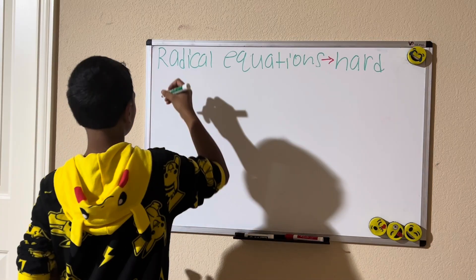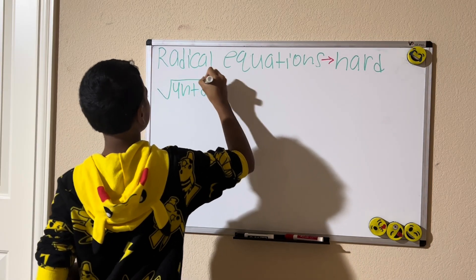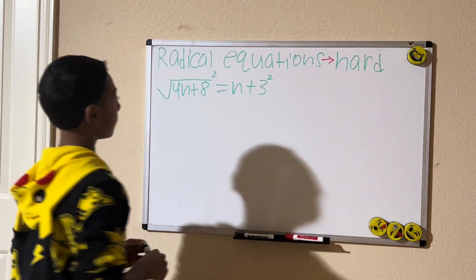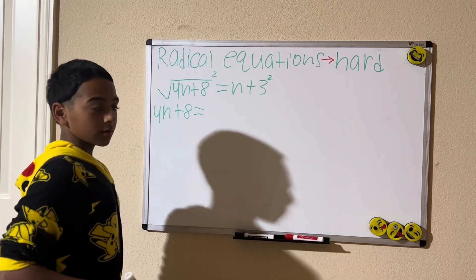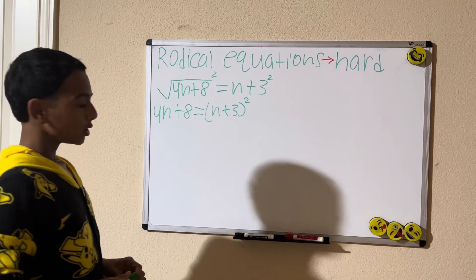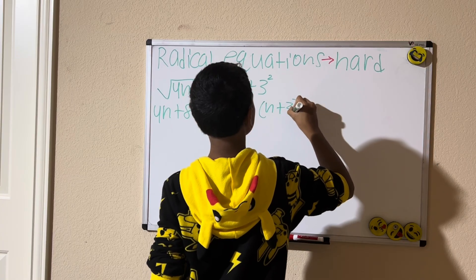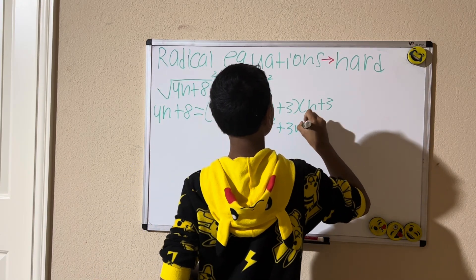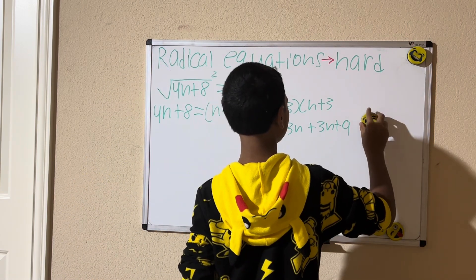For the next problem, we have the square root of 4n plus 8 equals n plus 3. We're going to square both sides. We get 4n plus 8 on the left. On the right we're squaring the entire binomial n plus 3, and n plus 3 squared gives us n squared plus 6n plus 9.